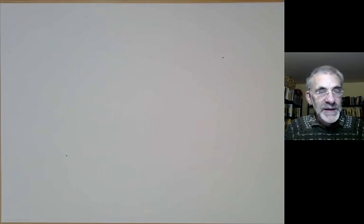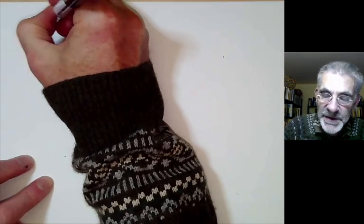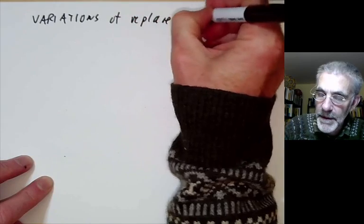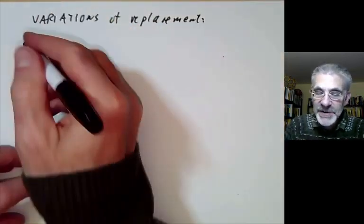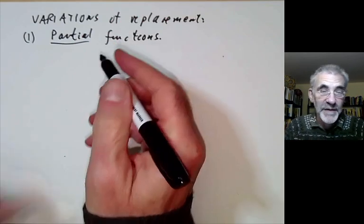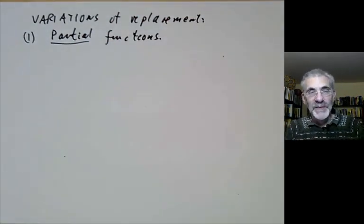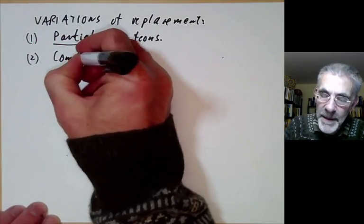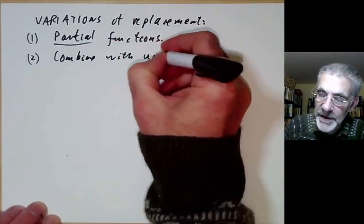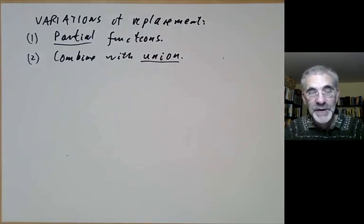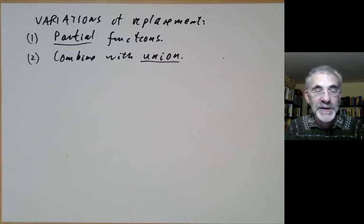There are actually several variations of the axiom of replacement. First, we can allow partial functions instead of functions defined everywhere, which means we can drop the axiom of separation without worrying about the empty set. Secondly, we can combine it with the axiom of union, since replacement is really used together with union to construct sets of the von Neumann hierarchy. Some authors, such as Bourbaki, actually combine these two axioms into a single axiom.